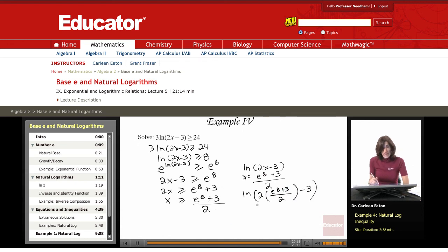The 2s cancel out, giving me ln(e^8 + 3 - 3). The 3s cancel, so this gives me ln(e^8). By the identity property, this equals 8, so I'm fine.